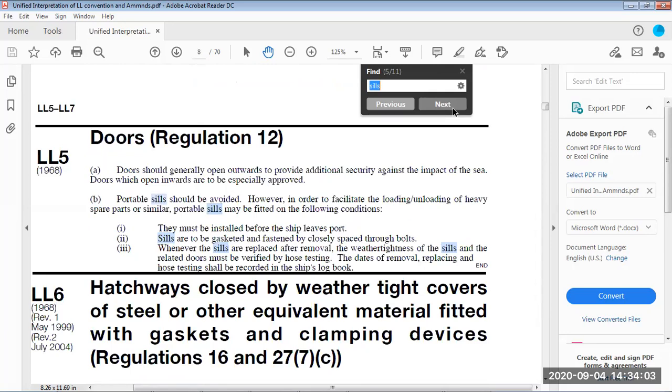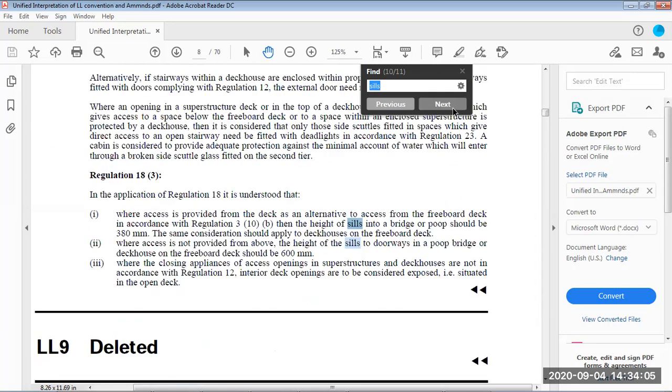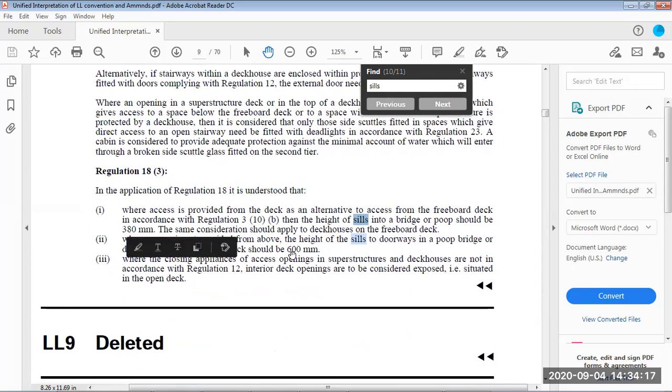The main thing is, for the other doors, for accommodation doors which are on the bridge up to poop deck, the height of this combing should be at least 380 mm. For the other doors on the poop deck or anywhere on the freeboard deck, the height of combing should be at least 600 mm.